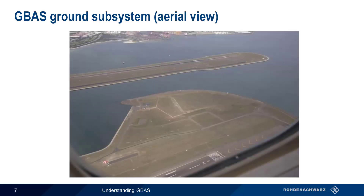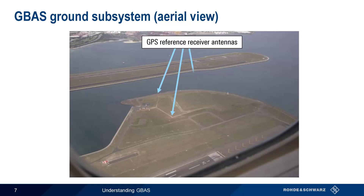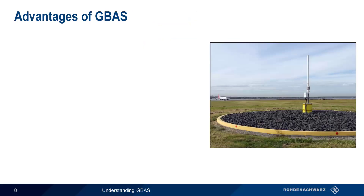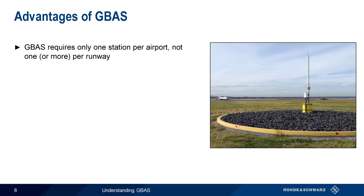Here's an aerial view of a GBAS installation at an airport. There are four reference receivers in different locations, which send their information to a nearby GBAS facility shelter. After computing and formatting the correction data, this information is transmitted using the VHF data link antenna. Note that unlike traditional ILS glide slope and localizer antennas, the GPS reference receiver antennas do not need to be located along the sides or at the ends of the runway, and a single set of reference stations can be used to provide corrections for all runways at a particular airport. Since GBAS reference receiver locations are not tied to a particular runway, GBAS only requires one station per airport, not one or more stations per runway — a substantial advantage compared to traditional ILS.